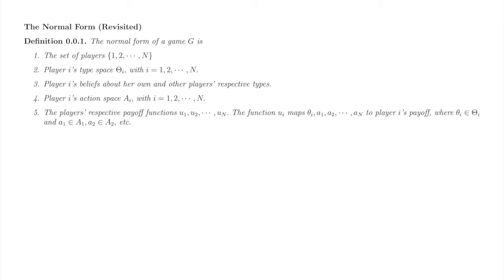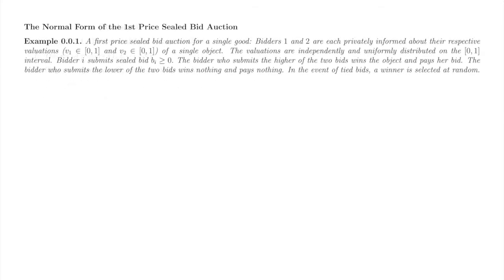In a game of complete information, each player knows who the other players are. In a game of incomplete information, she knows that each other player is in fact one of several possible types. Player i's payoff function maps the actions of all players and the type of player i to player i's payoff. Now we'll give two examples of static games of incomplete information.